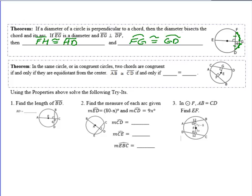Our last theorem here is that in the same circle or in congruent circles, two chords are congruent if and only if they are equidistant from the center. AB, this chord here, is congruent to chord CD if and only if the distance from this perpendicular segment GE is equal to the distance from this little segment EF. If these two pieces are equal to each other, then I can assume the chords are equal. Or vice versa, if I know the chords are equal, I can assume these little pieces are equal.